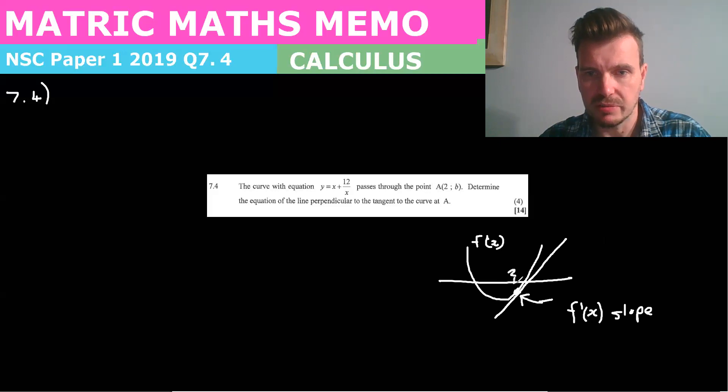So if this x value is two, then at this point here where x is two, the slope f'(2) would equal whatever value I got.